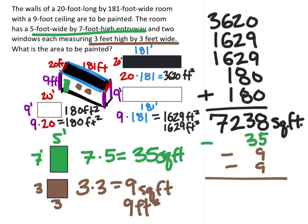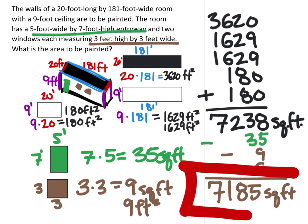7,238 square feet, minus 35, minus 9, minus 9. And so the final area that I get is 7,185 square feet, and that would be the total surface area that needs to be painted on this wall.